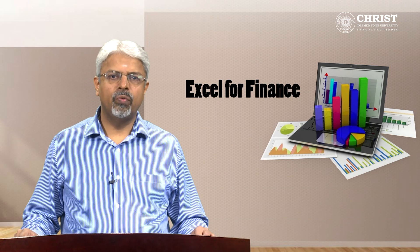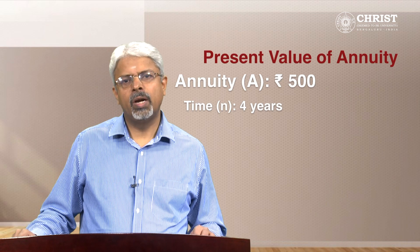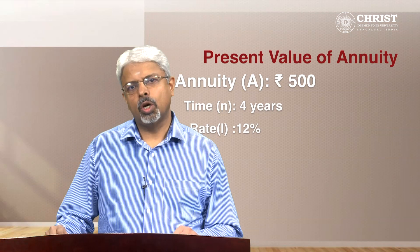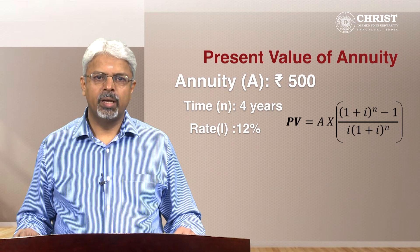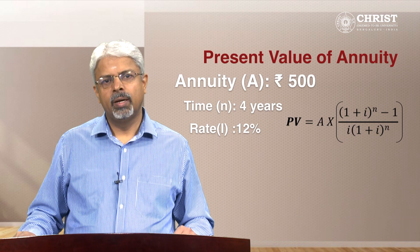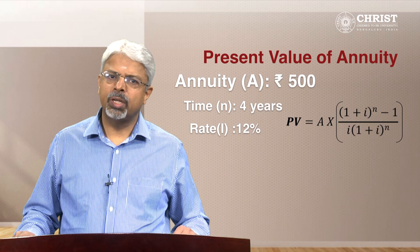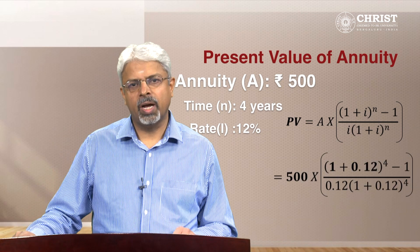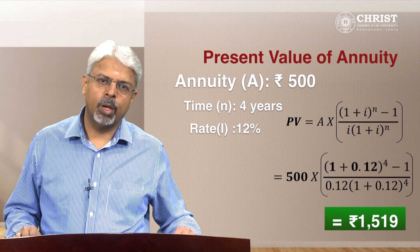After lump sum, let us move to a case of recurring cash flows. The example: rupees 500 is received at the end of each of the next four years — what is the equivalent value today assuming the interest rate is 12 percent? The formula for the present value of annuity is: A multiplied by [(1 + i)^n − 1] divided by [i × (1 + i)^n]. Substituting 500 for A, 12% for i, and 4 for n, we get rupees 1,519.